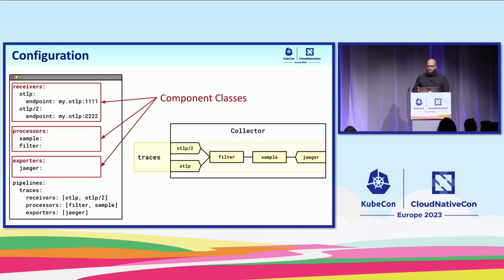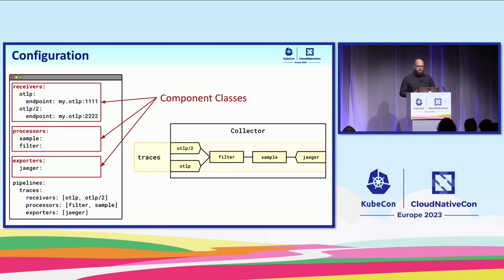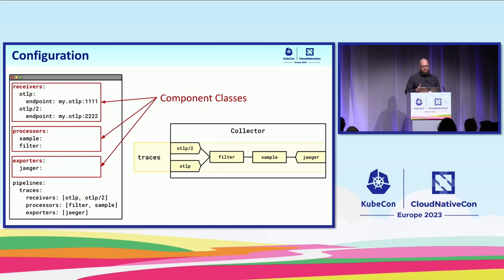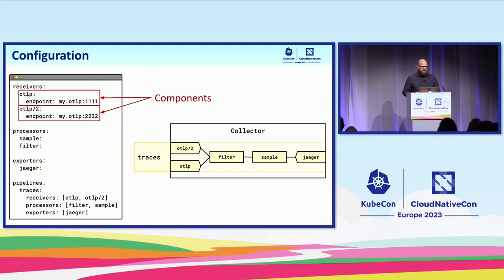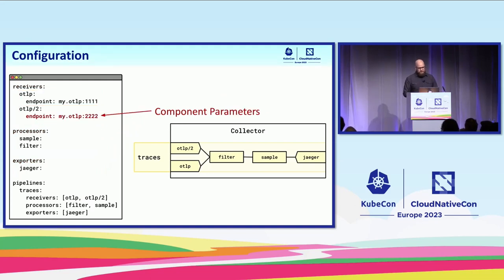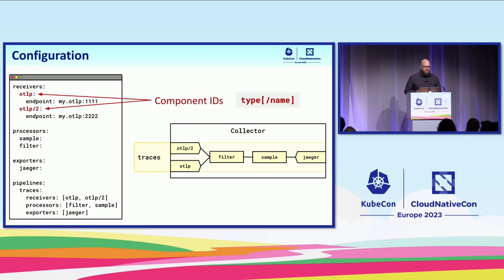I'm going to be showing you a lot of pipeline diagrams, so I think it's important to understand the configuration that goes along with these diagrams. First of all, we have a section for configuring each component class: receivers, processors, and exporters. Within that class you can configure multiple components. Each component has its own parameters, whatever is appropriate for that component. But importantly for this talk, component IDs — these are a unique way to refer to this configuration. It's a very simple format: just the type of component and then optionally a name.